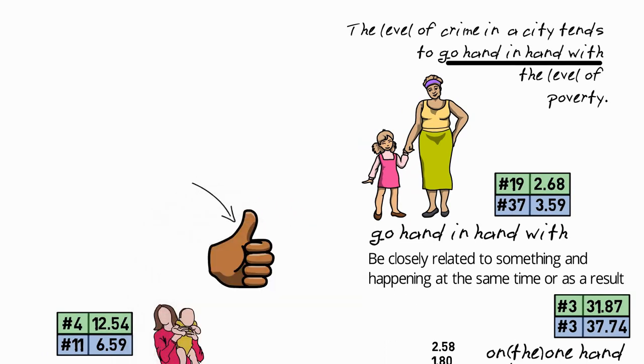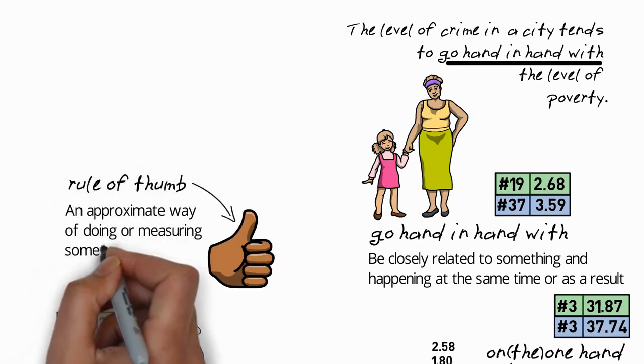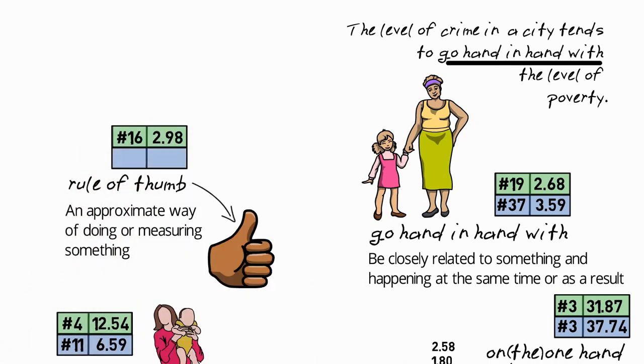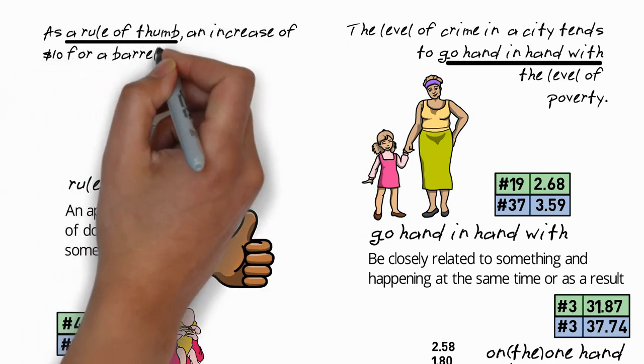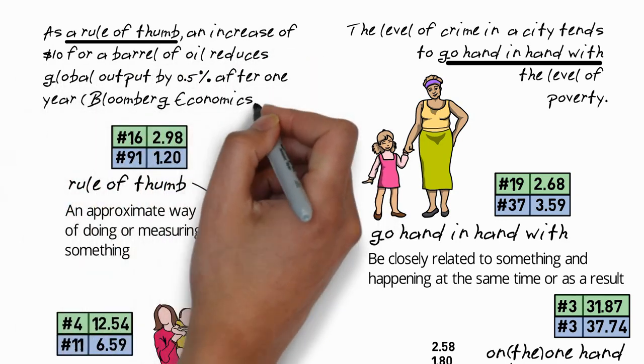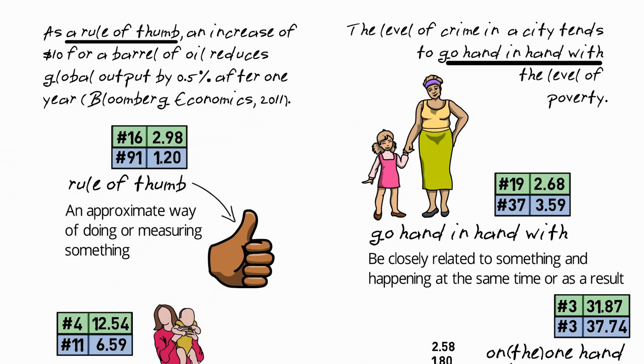So this idiom is a bit less common than the ones we've just seen. The level of crime in a city tends to go hand in hand with the level of poverty. In other words, the level of crime and the level of poverty are closely related, and it's likely the level of crime is the result of the level of poverty. The next body idiom is rule of thumb, and this means an approximate way of doing or measuring something.